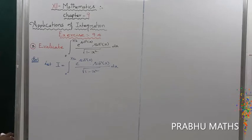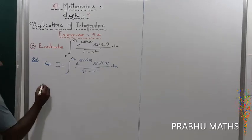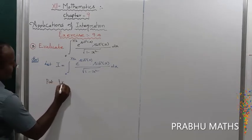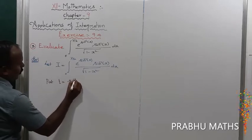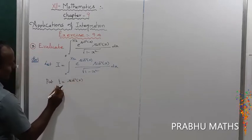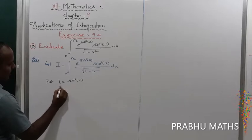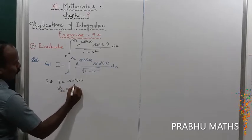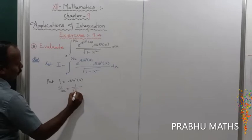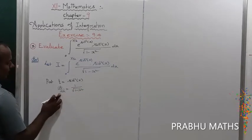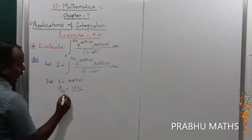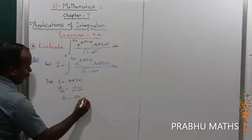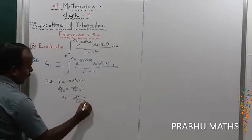First, substitution method. Put t equal to sin inverse of x. Differentiating with respect to x, dt by dx equals 1 by root of 1 minus x squared. So dt equals dx divided by root of 1 minus x squared.